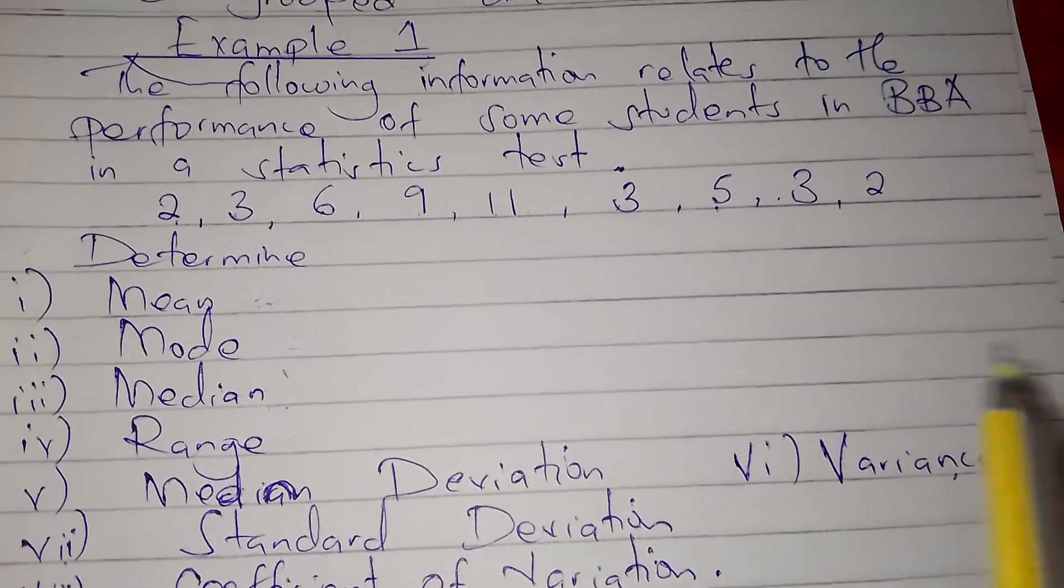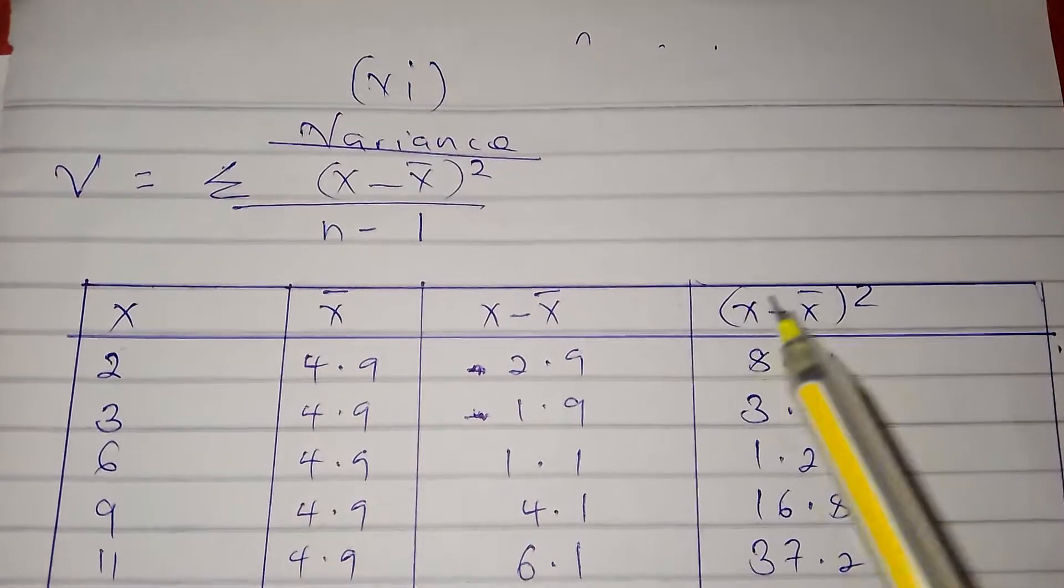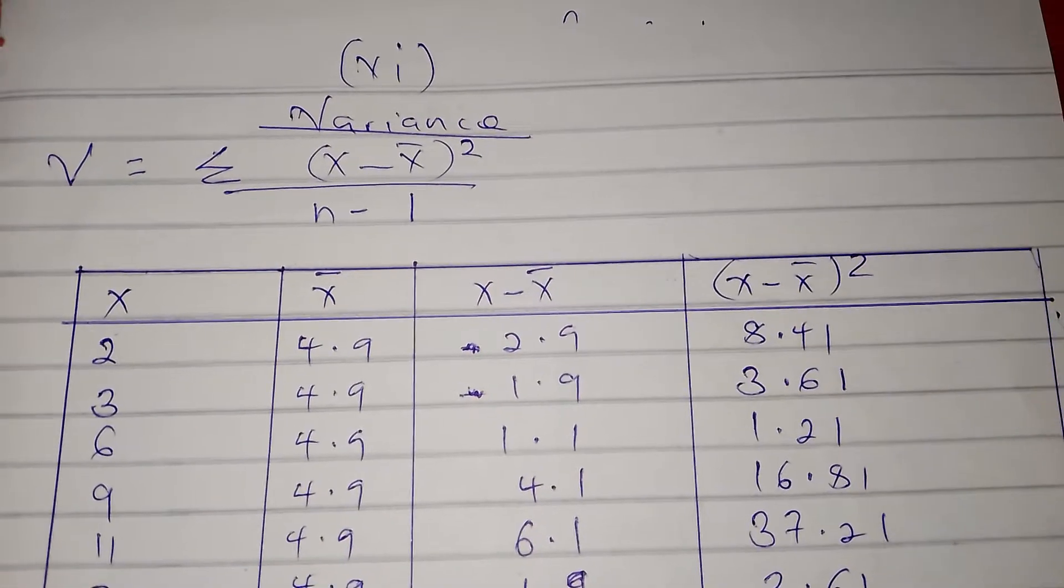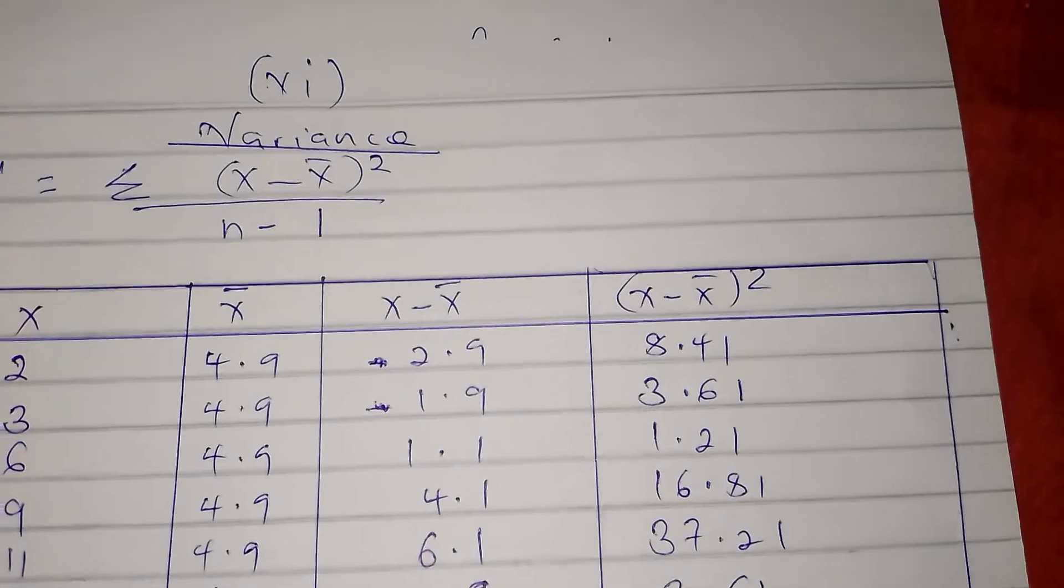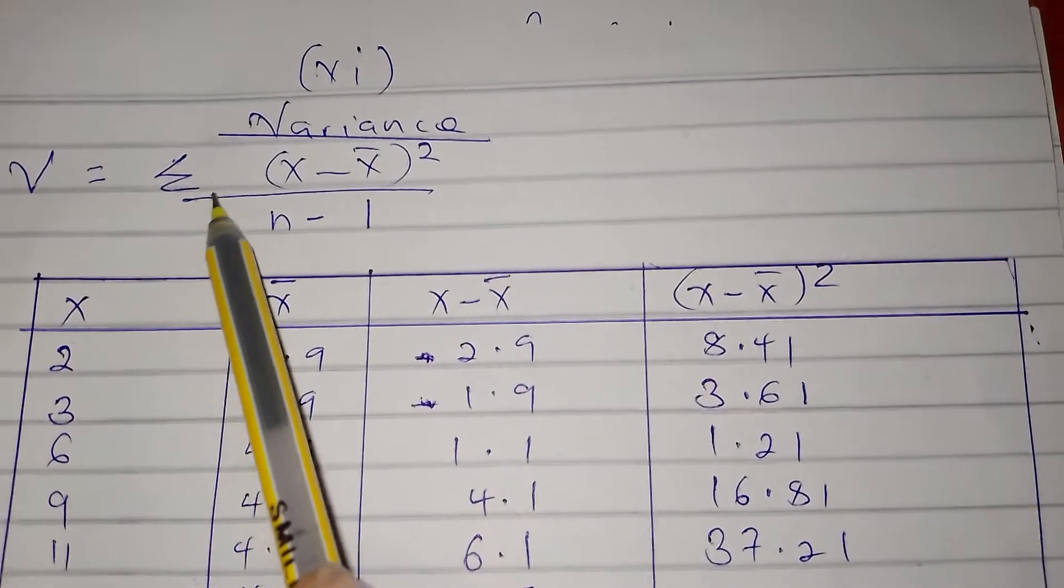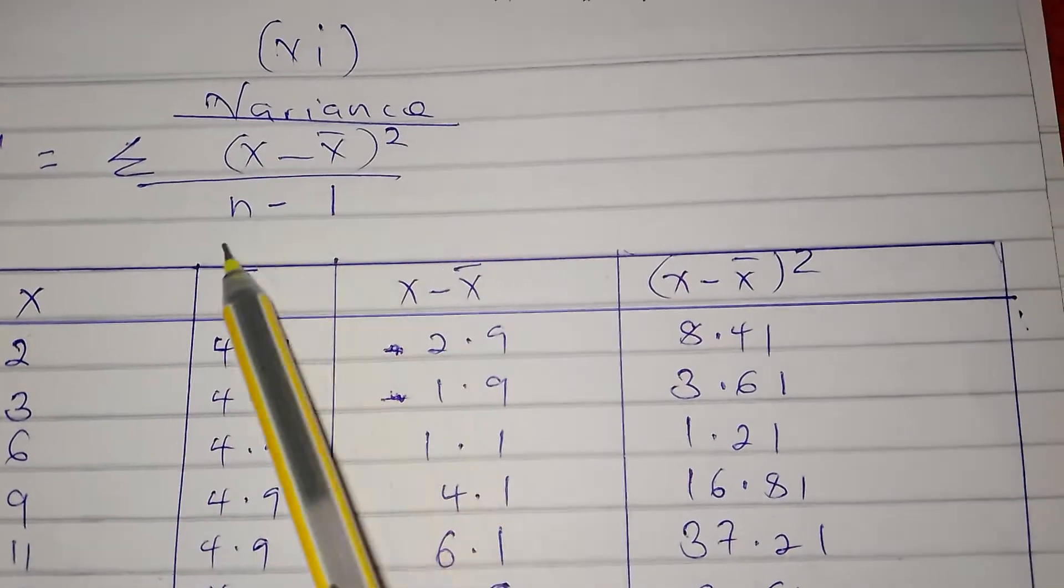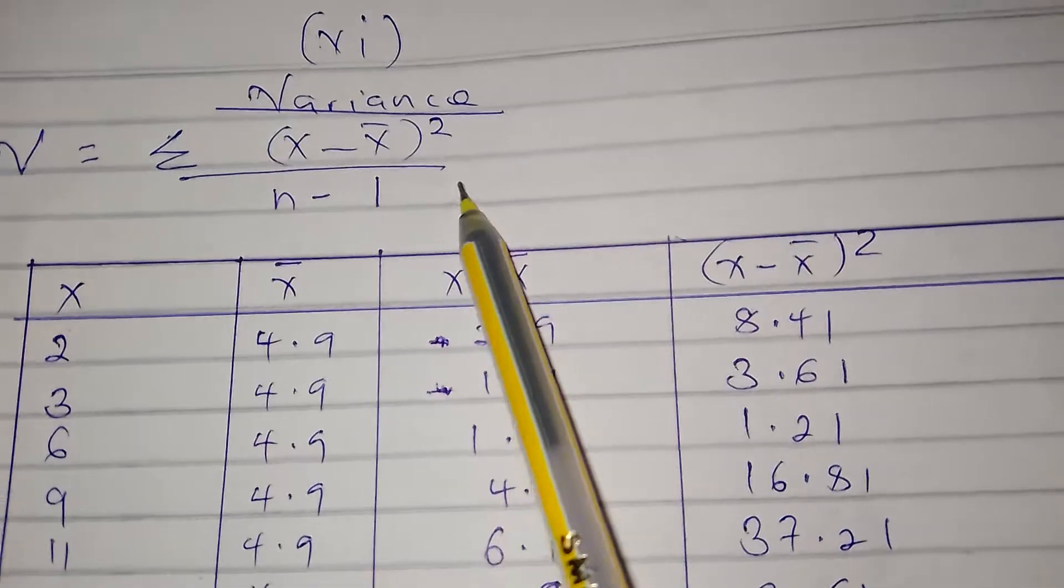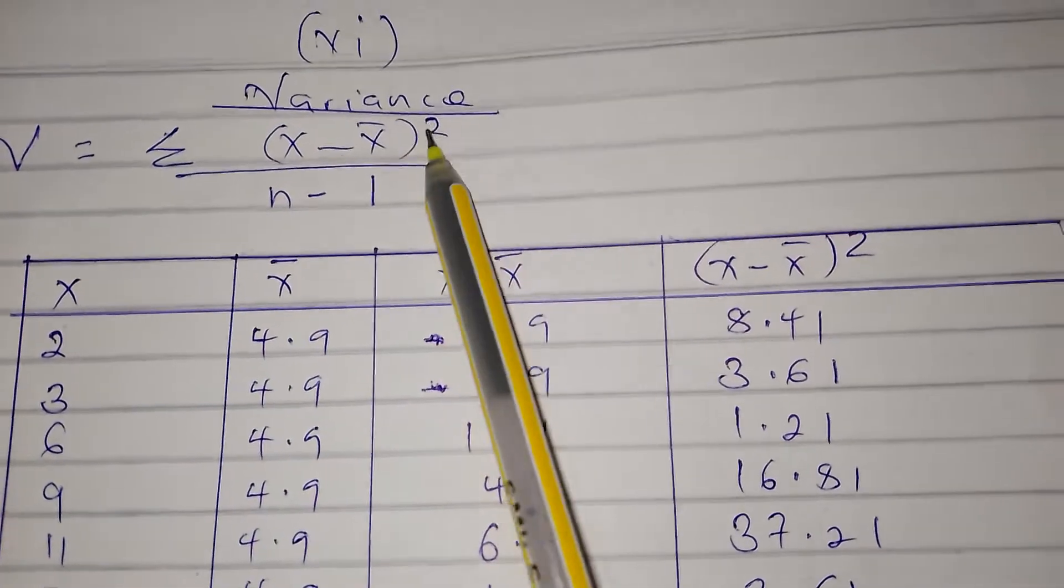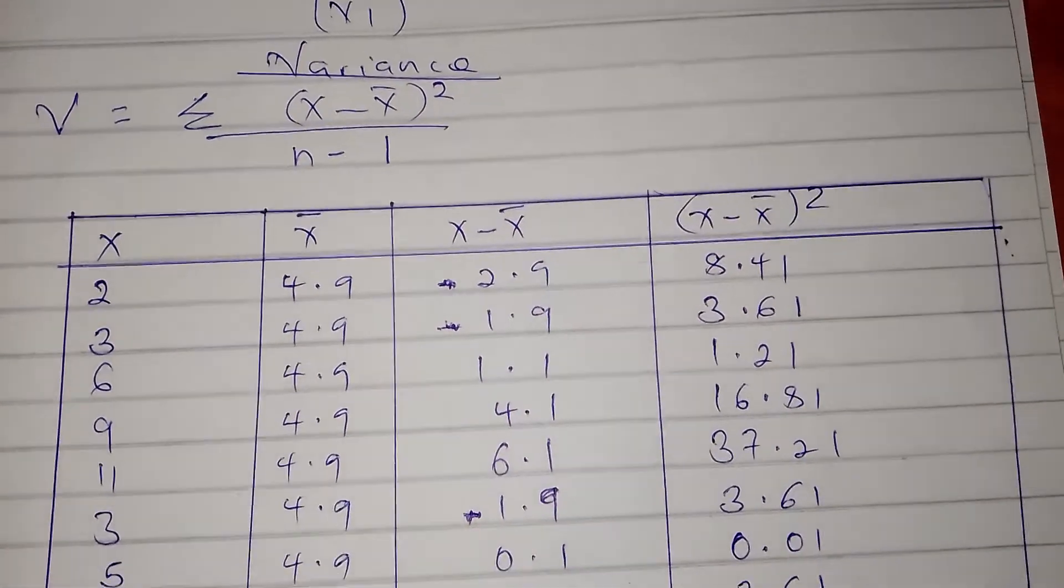Variance and standard deviation are measures of dispersion. The formula for variance is summation (x - x̄)² divided by (n - 1). This is the formula for variance.